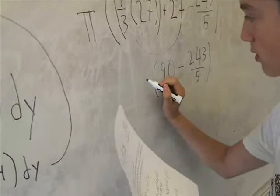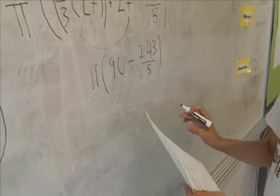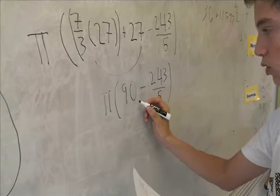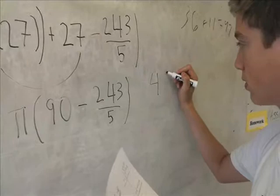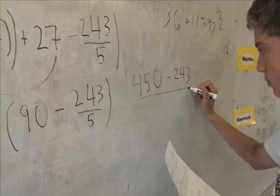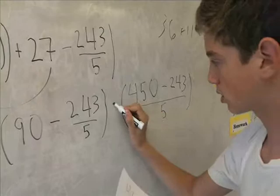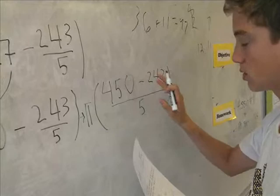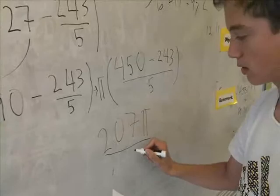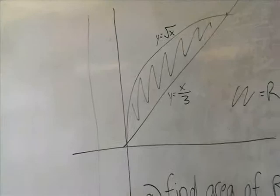And then we're going to subtract that by 243 over 5, which we get from right here. Okay. And all this is going to be multiplied. By pi? By pi, because it's the area of the circle. Okay. And so, this is going to come out to be, oh, we can just do this last part. Okay. We're going to multiply this by 5, and we get 450, minus 243, all over 5.